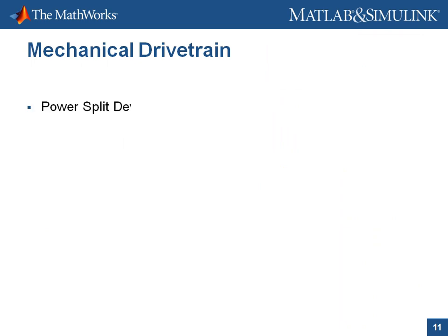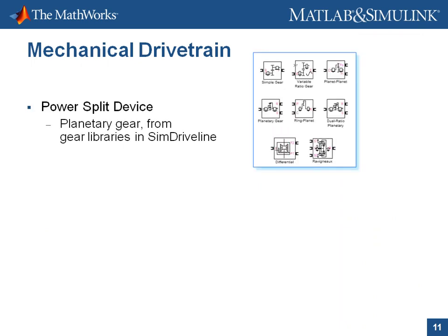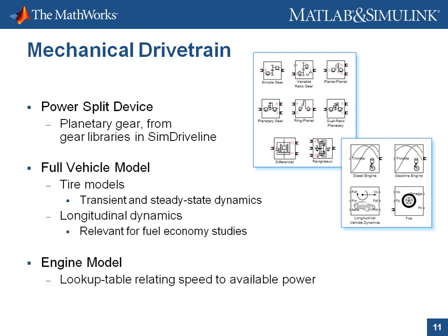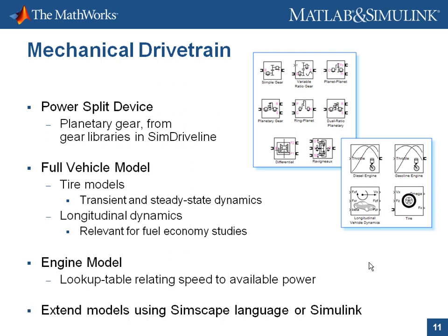The power split device is modeled as a planetary gear using the gear libraries in SimDriveline. The full vehicle model includes tire models and longitudinal dynamics, with transient and steady-state tire dynamics included for fuel economy studies. The engine model is a lookup table relating speed to available power. If these models are insufficient, you can extend them using the Simscape language or Simulink.